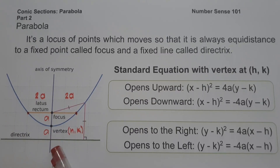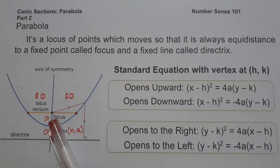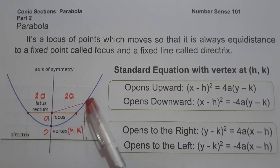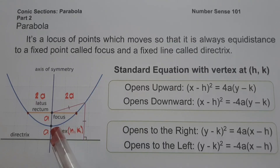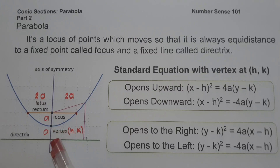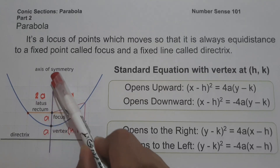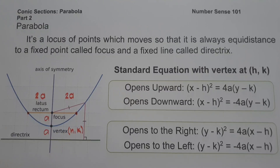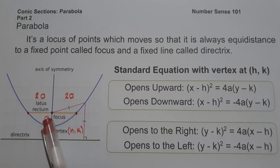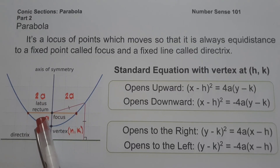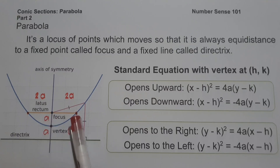The directrix is a line behind the opening of the parabola. The focus is a point on the axis of symmetry — it tells us where the opening of our parabola is. The distance between the vertex and the focus is a, and the distance between the vertex and the line of the directrix is also a. This line is what we call the axis of symmetry — it divides the parabola into two congruent regions. The line connecting two points of the parabola passing through the focus is what we call the latus rectum, and the distance between the focus and one of the endpoints of the latus rectum is 2a.